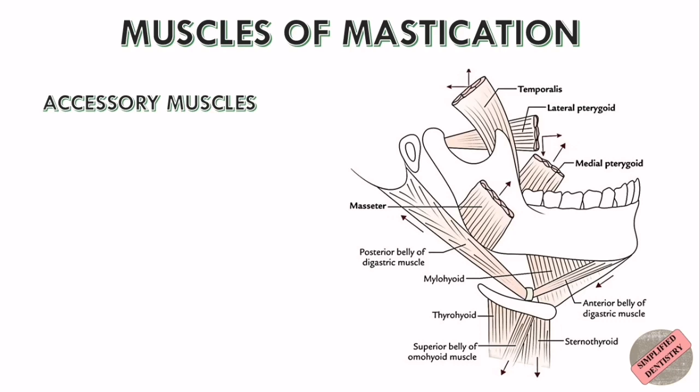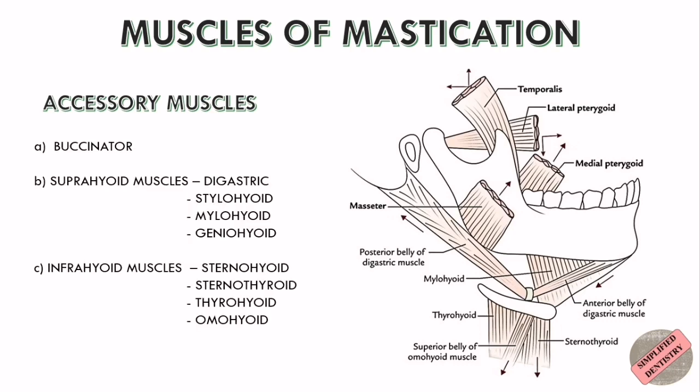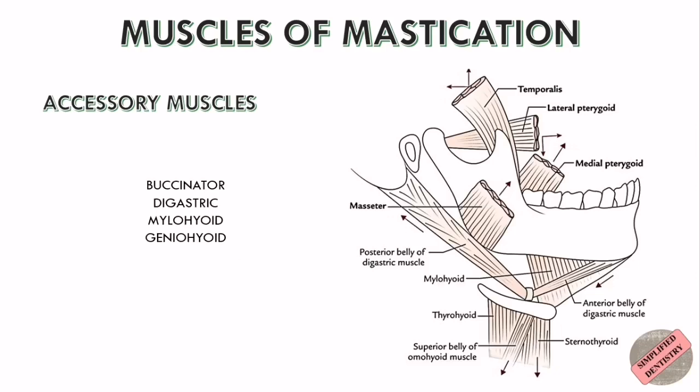Now let's see about the accessory muscles. There are a lot of accessory muscles like the buccinator, suprahyoid muscles, and infrahyoid muscles, but the accessory muscles of mastication which you need to know are buccinator, digastric, mylohyoid, and geniohyoid.